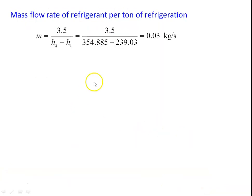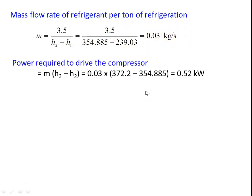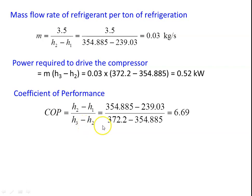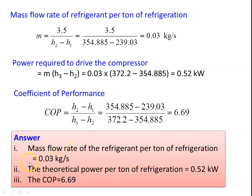Mass flow rate per ton of refrigeration: 1 ton of refrigeration equals 3.5 kJ/s. So mass equals 3.5 divided by (H2 minus H1), giving 0.03 kg/s. Power required to drive compressor: M into (H3 minus H2) equals 0.03 into (372.2 minus 354.885) equals 0.52 kilowatts. COP equals (H2 minus H1) divided by (H3 minus H2), substituting all values gives 6.69. Answers: mass flow rate per ton of refrigeration is 0.03 kg/s; theoretical power per ton of refrigeration is 0.52 kilowatts; COP equals 6.69.